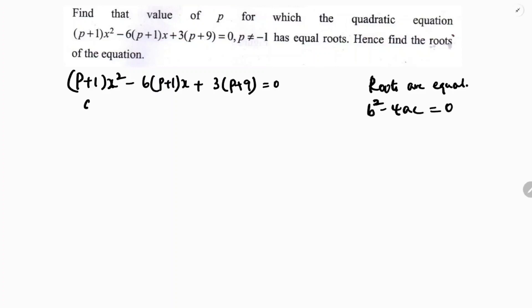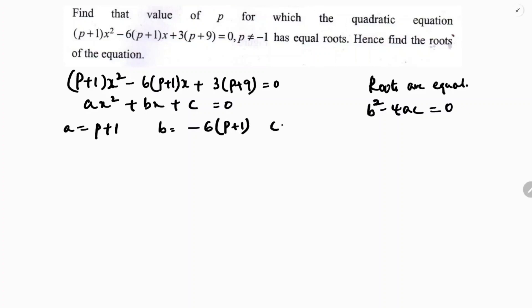Comparing with the standard form ax² + bx + c, the value of a is the coefficient of x², which is (p+1). b is -6(p+1), and c is 3(p+9).